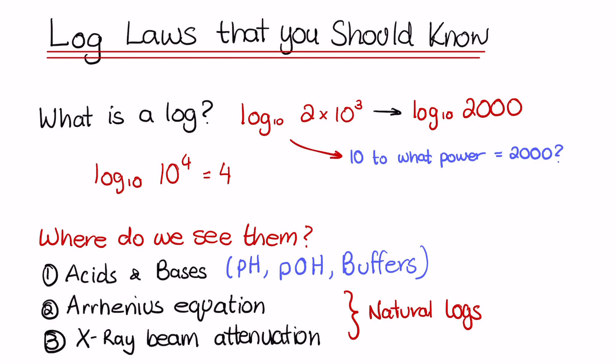So with this example here, we're really seeing 10 to what power will equal 2000. But usually with logs, just to make it easier, we write it in scientific notation. So instead of writing 2000 we write 2×10³. I'll go through this towards the middle of the video, but that's essentially what a log is.